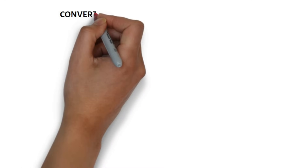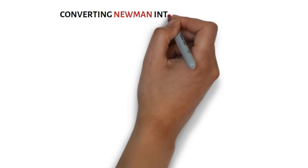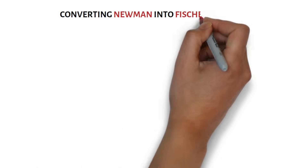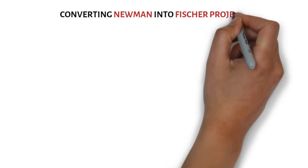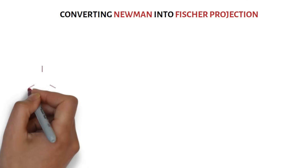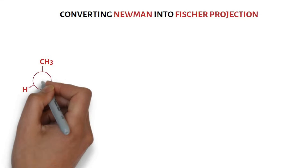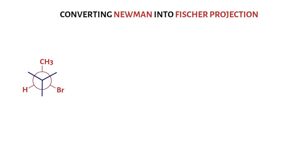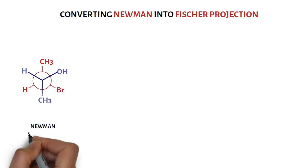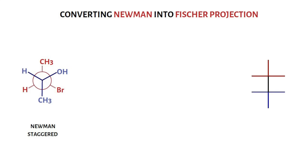Let us discuss the conversion of Newman projection into Fischer projection. Consider this staggered Newman projection. We have to convert it into Fischer projection, which by default is eclipsed.